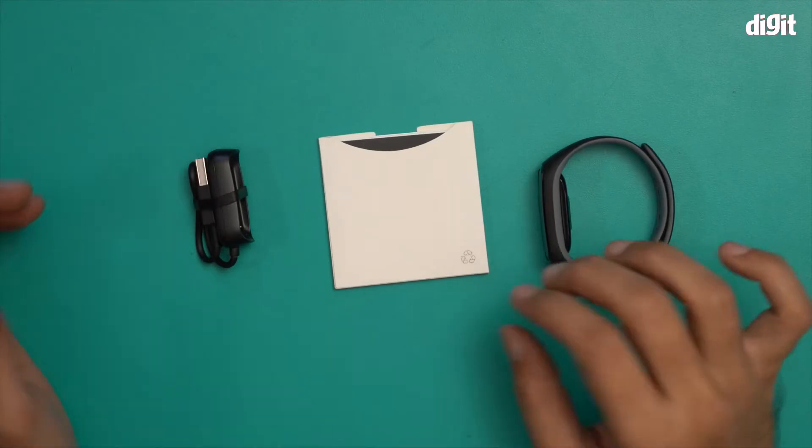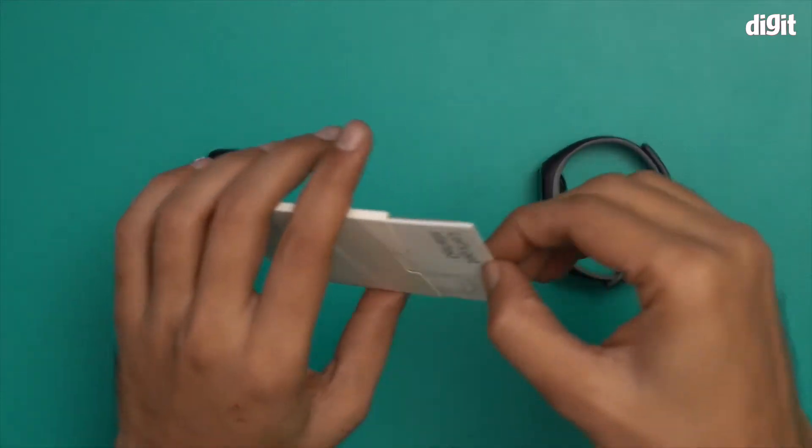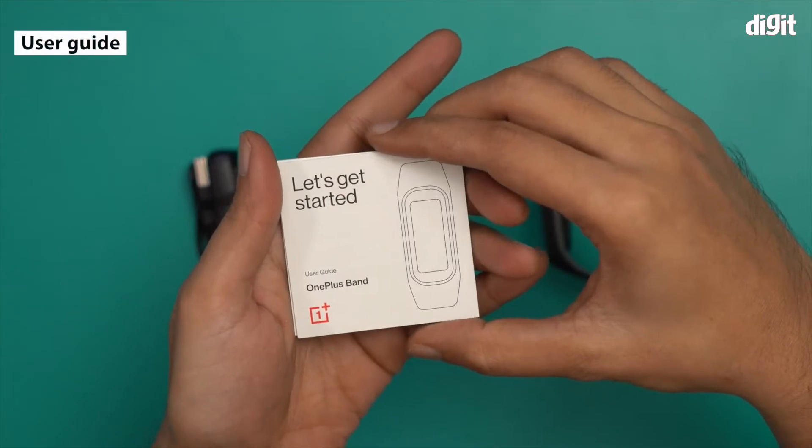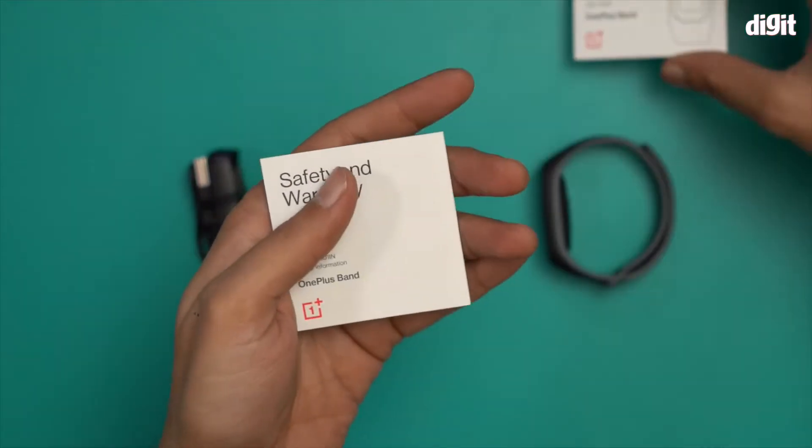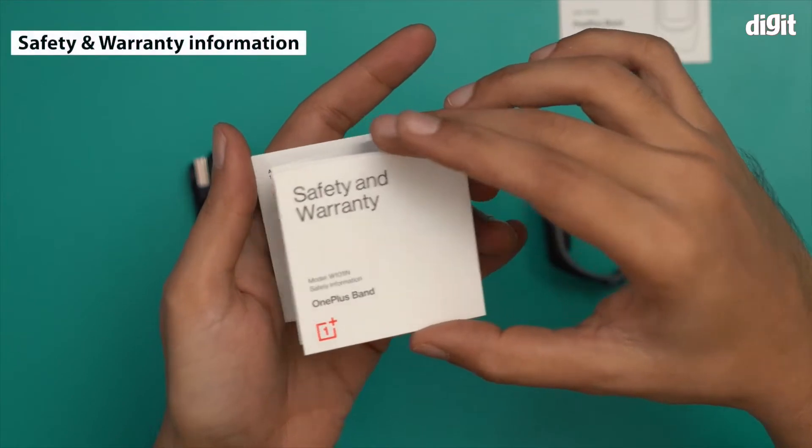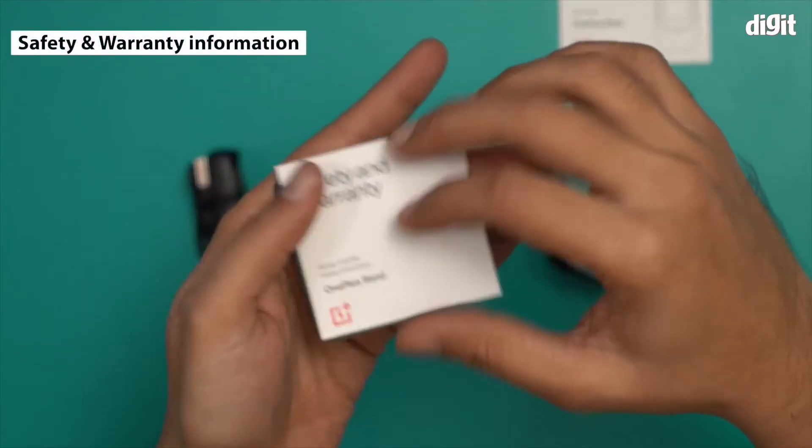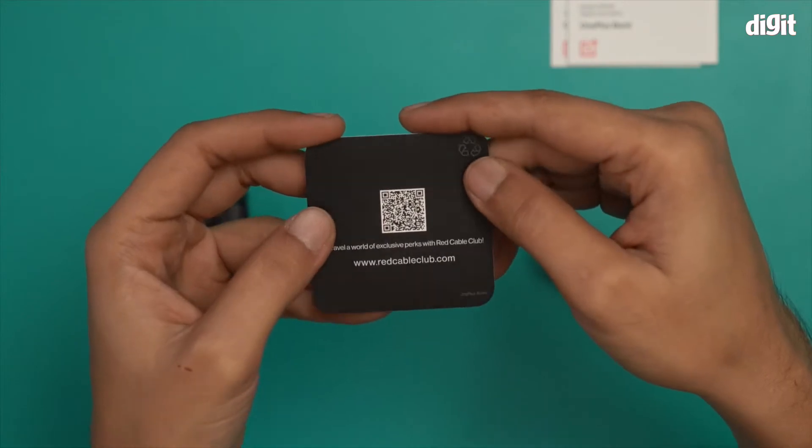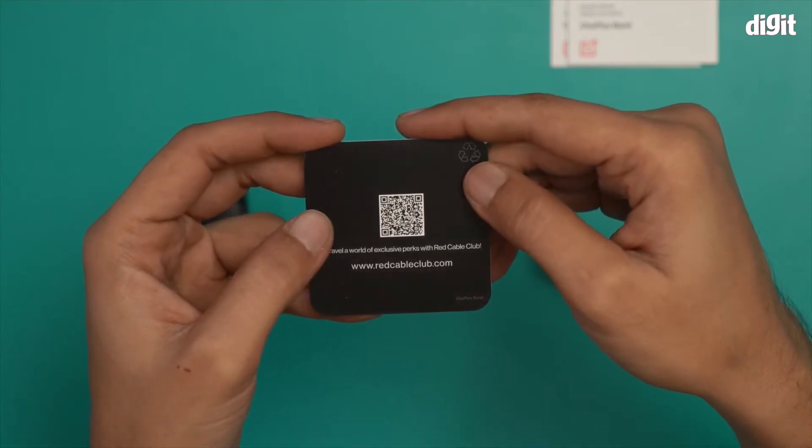And this is it. These are the components of the box. First up we have some documents. This is the user guide for the OnePlus band. Everything you want to know is in this document. This is the safety and warranty information. And this is a redeem coupon from Red Cable Club.